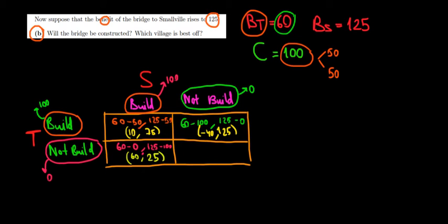We do one more. Over here, the last cell, if none of them builds the bridge, they will have no benefit from it, but also no cost because they're not building it. So it would be a payoff of zero, zero.